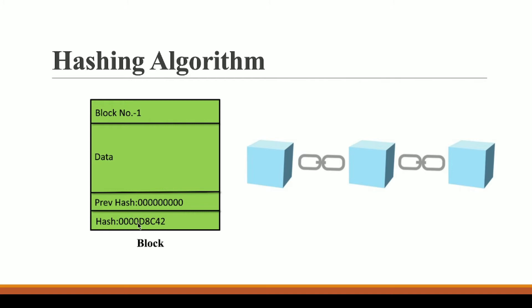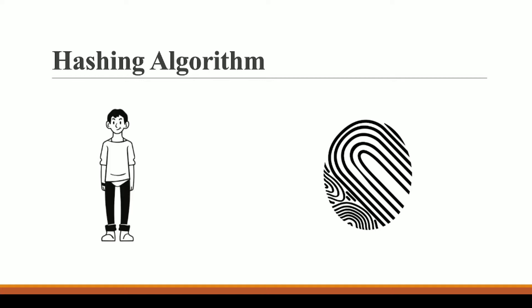Now this hash is very important. You can see alphanumeric characters on your screen — what do they mean? This hash is actually a unique identifier for this block of the blockchain. Every human being has a fingerprint, and no two human beings can have the same fingerprint.